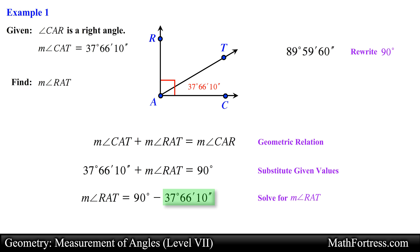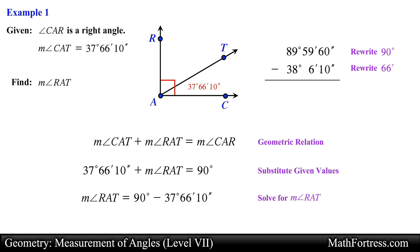The measurement of angle CAT has 66 in the minutes place. Since this is more than 60 minutes we need to convert 60 minutes into 1 degree, obtaining an alternative form of the angle. Now that we have modified both angles, let's carry out the subtraction — subtracting the seconds, minutes, and degrees from one another. In the end we obtain 51 degrees 53 minutes 50 seconds as the final answer.